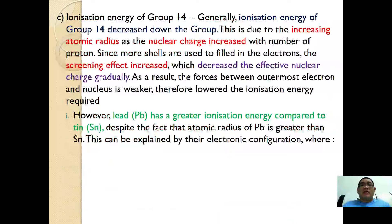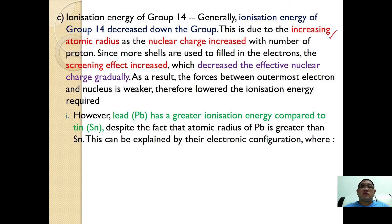Next, we are going to study ionization energy. As usual, ionization energy decreases when going down group 14. This is due to the increasing atomic radius as the nuclear charge increases; however, the screening effect also increases at the same time, which decreases the effective nuclear charge gradually. As a result, the force between the outermost electron and the nucleus is weaker, therefore lowering the ionization energy.